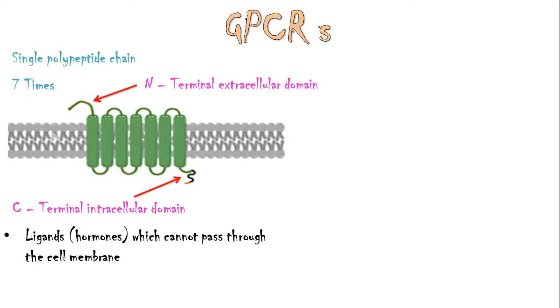Ligands such as peptide hormones which cannot pass through the cell membrane, bind to the extracellular domain, and trigger intracellular signaling cascades, which mediate the functions of that particular ligand.